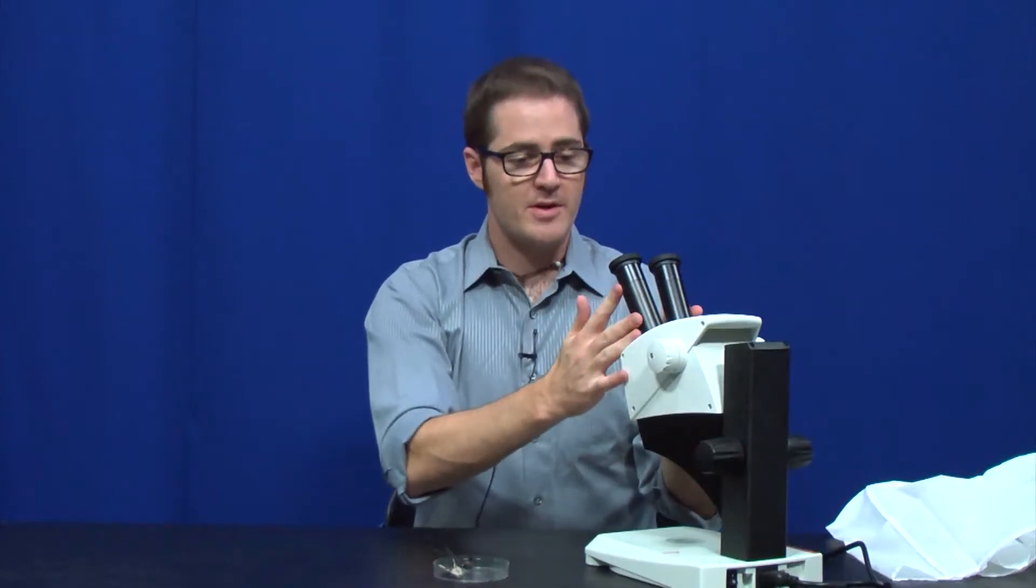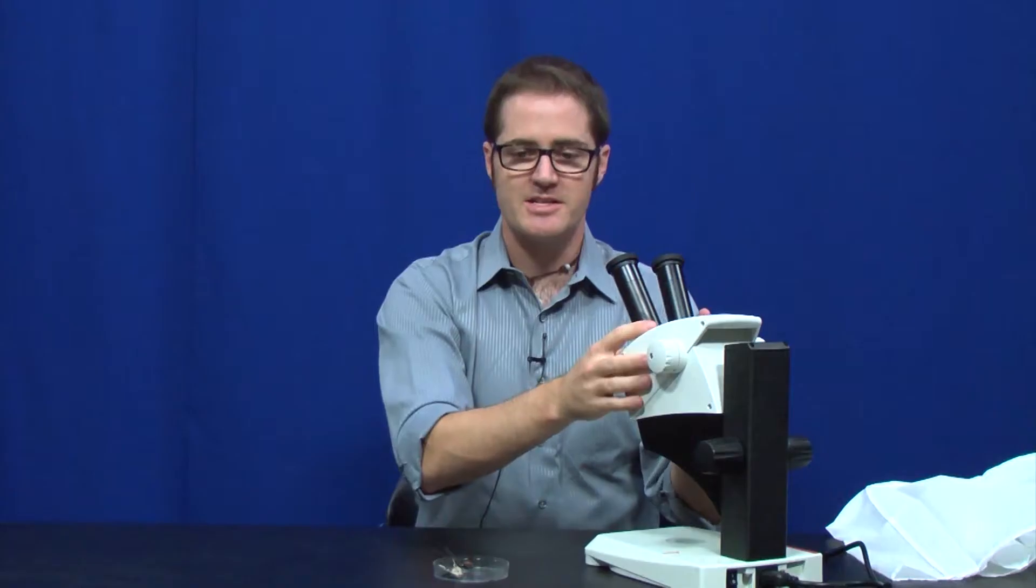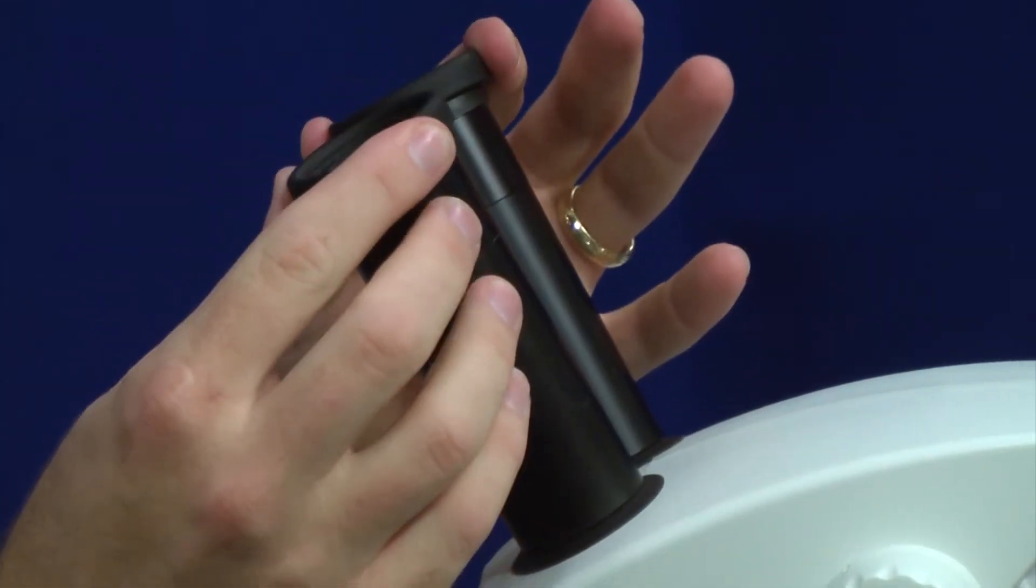The eyepieces do adjust width-wise because everybody has different sized heads, so we want to make sure we can comfortably see through the microscope. It does also have rubber eye cups on them. Right now I have them folded down.